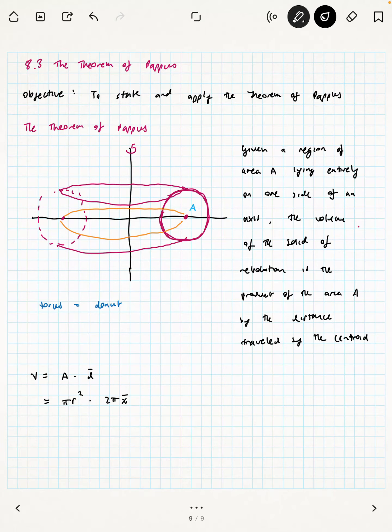The area of that circle is going to be πr², and the distance traveled by the centroid is going to be 2πx̄. Where x̄ is the location, how wide that is.